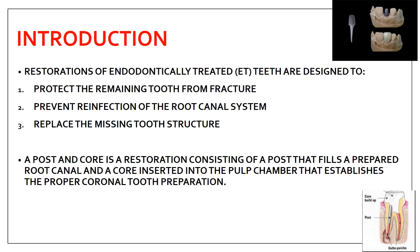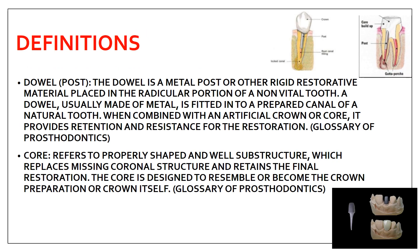Post and core is a restoration consisting of a post that fills a prepared root canal. It is basically a two-part system: the post is the part which goes into the root canal, and the core is inserted into the pulp chamber and establishes the proper coronal tooth preparation. You can remember - core 'C' is for crown, so the core portion is over that coronal tooth preparation. The post is like a screw that provides proper resistance for a grossly destructed tooth.